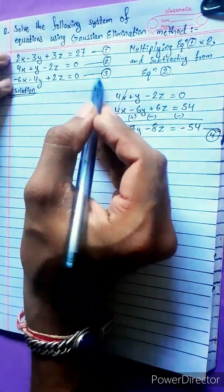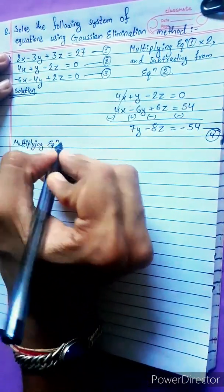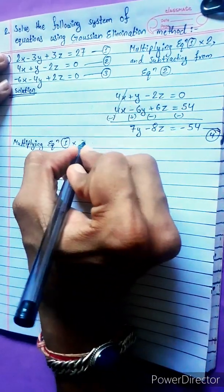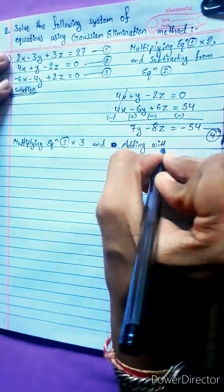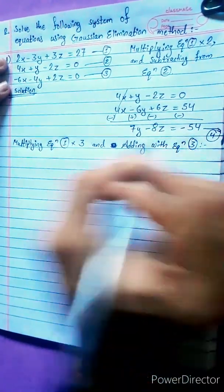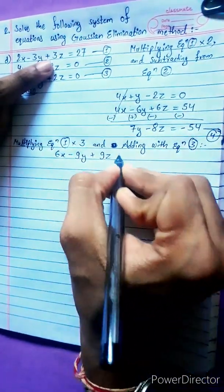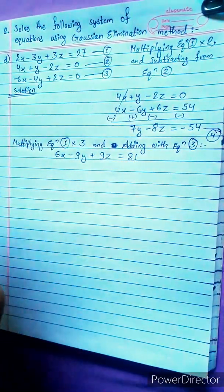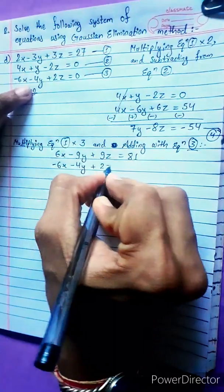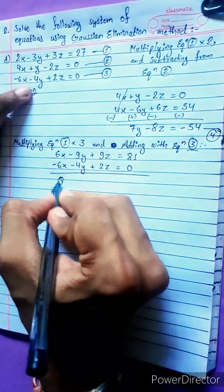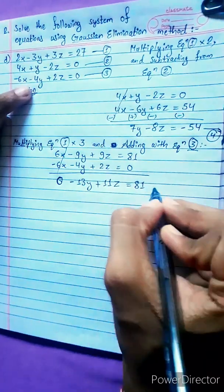Now solving equations 1 and 3: multiplying equation 1 by 3, giving 6x minus 9y plus 9z equals 81, and then adding with equation 3. Terms cancel and we get minus 13y plus 11z equals 81. This is our equation 5.